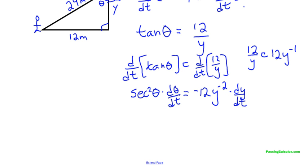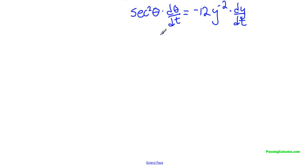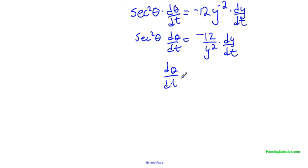Alright. So now I have an equation with what I want to find, d theta over dt. And I have all these things with the exception of y, which we can find using Pythagorean theorem in a second. But I'm just going to rearrange this guy a little bit. So I'm looking for d theta over dt. So let me just take care of this negative exponent first. So secant squared theta d theta over dt is equal to negative 12 over y squared times dy over dt. And now I'm going to just divide both sides by secant squared theta. So really what I'll just do is I'll just put 1 over secant squared theta. So instead of just dividing this guy, I'll just put it on the other side times negative 12 over y squared times dy over dt. A little bit messy, but you guys get the point.